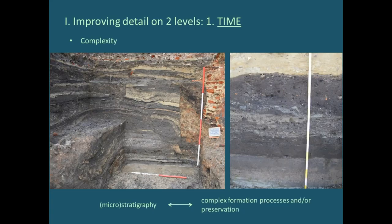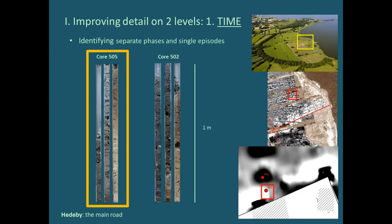The second problem is the result of complex formation processes and preservation. We get thick homogeneous deposits, sometimes called dark earths, which were thought to be maybe waste dumps or garden layers. But if we look at these with the microscope, we can actually see that a preserved microstratigraphy is still there and can be understood. These are the two biggest problems that micromorphology can really help with.